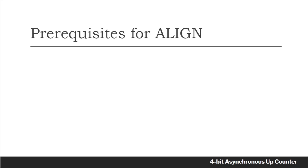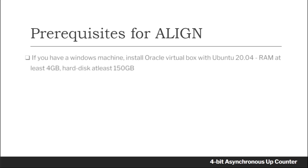The pre-requisites for Align: to use Align on a Windows machine, it is necessary to install Oracle VirtualBox with Ubuntu 20.04. The installation requires a minimum of 4GB of RAM and at least 150GB of hard disk space.